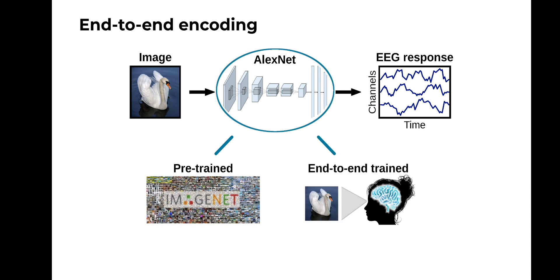Instead, with a novel approach called end-to-end encoding, deep learning architectures are directly trained with brain data, specifically on the task of predicting neural responses to arbitrary images. This makes end-to-end encoding interesting for at least two reasons. First, relevant to neuroscientists, training complex computational algorithms directly with brain data could lead to models with visual representations more aligned to those of the brain. Second, relevant to computer scientists, infusing computer vision models with brain data might be a useful inductive bias to improve both the performance and robustness of such models.